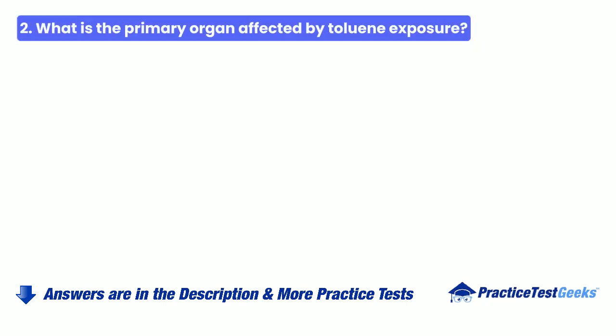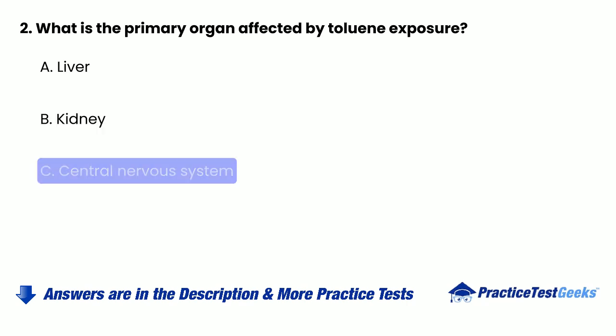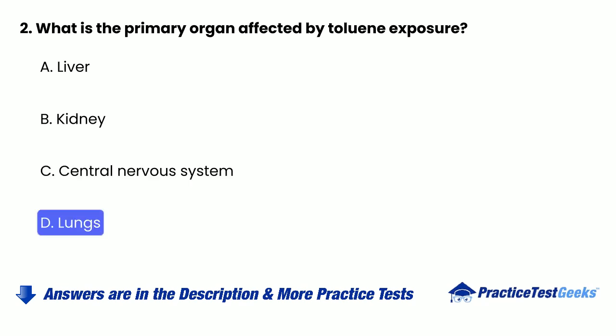Question 2: What is the primary organ affected by toluene exposure? A. Liver. B. Kidney. C. Central nervous system. D. Lungs.